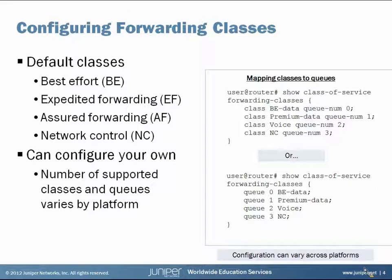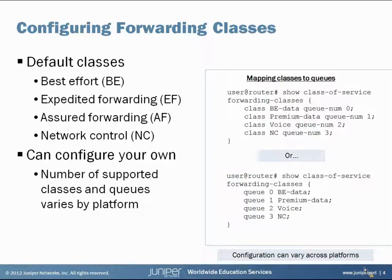You can configure your own forwarding classes, and you can see some examples on the right side. Depending on the device you're working on, you might configure either the first or second method, but they essentially give the same result. Under the class of service configuration hierarchy there's a forwarding classes section. You name your different forwarding classes and associate each class with a queue. The number of supported queues and classes can vary depending on the platform, so check the technical documentation for your particular product.